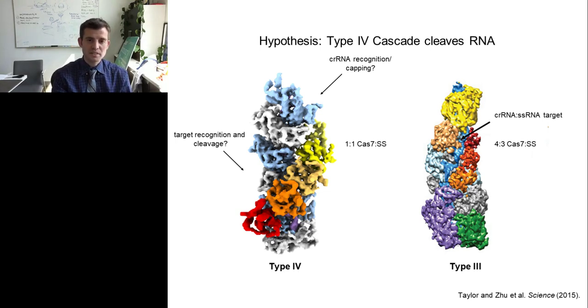Our hypothesis is that the type 4 cascade cleaves RNA similarly to a type 3 complex. On the right-hand side, you could see a type 3 complex that I solved as a postdoc at Berkeley with Jennifer Doudna. In this particular complex, we have both the CRISPR RNA and a target RNA bound to it. On the left, you'll see the type 4 complex. Again, looks very similar. In this particular complex, we don't have a target yet, but we think that it would target RNA based on the thumb having the catalytic residue that's similar to the type 3 complex, which doesn't exist in the type 1 cascades.